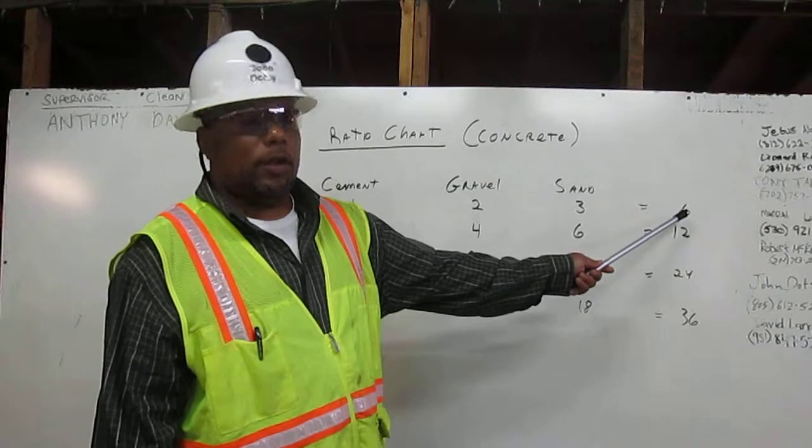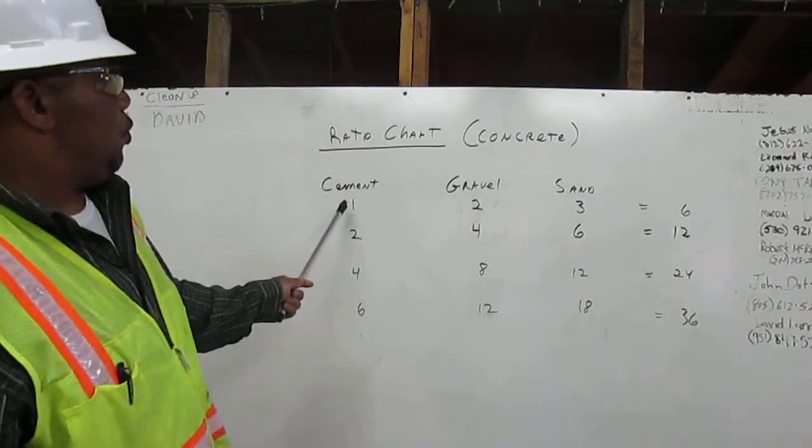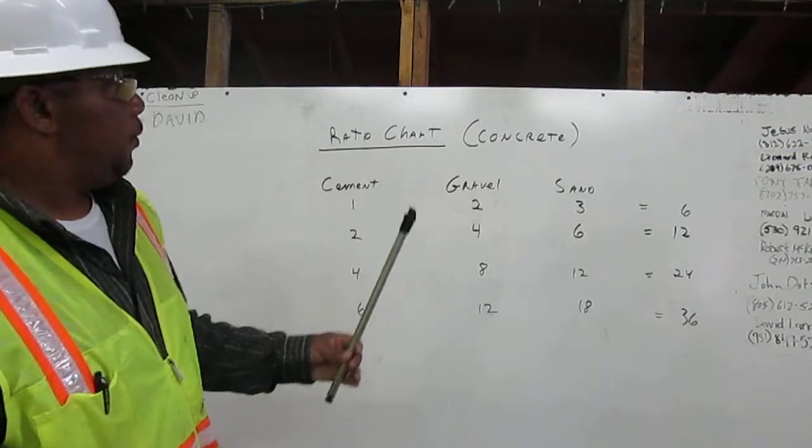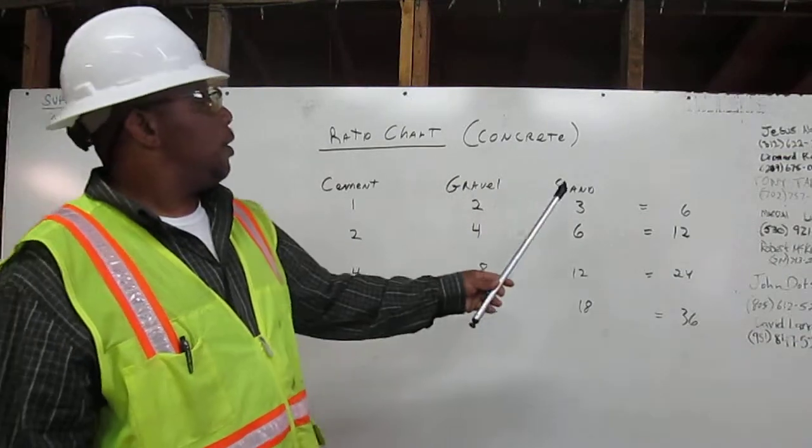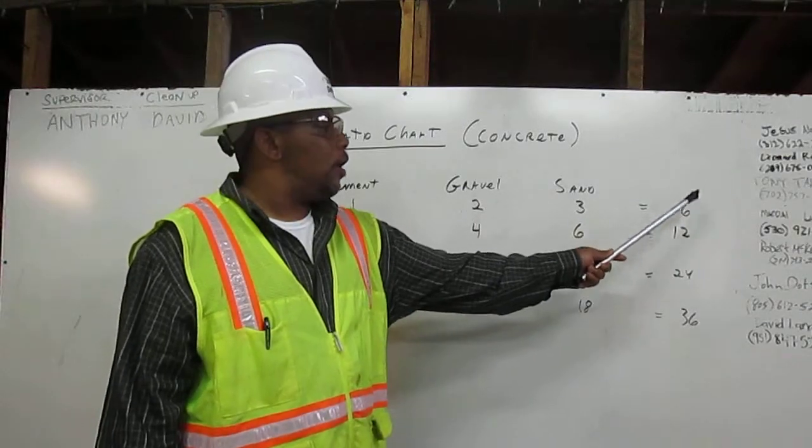To get 6 cubic yards of concrete, we're going to use 1 cubic yard of cement, 2 cubic yards of gravel, and 3 cubic yards of sand. That's going to give us 6 cubic yards of concrete.